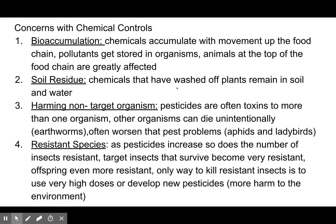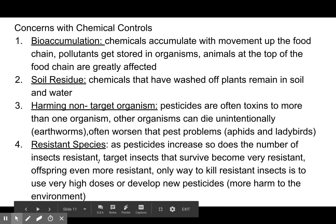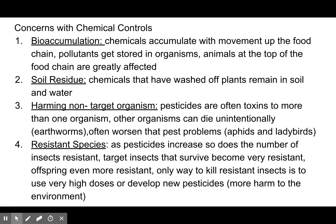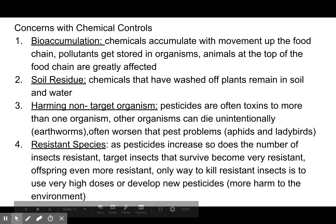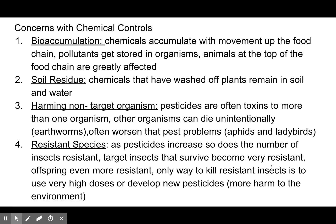Soil residue is another concern — chemicals that have washed off plants remain in soil and water and are really hard to remove. Pesticides are often toxic to more than one organism, so other organisms like earthworms can die unintentionally. Additionally, as pesticide use increases, so does the number of resistant insects. Target insects that survive become very resistant, and their offspring are even more resistant. The only way to kill resistant insects is to use a very high dose or develop new pesticides, and then it just cascades from there.